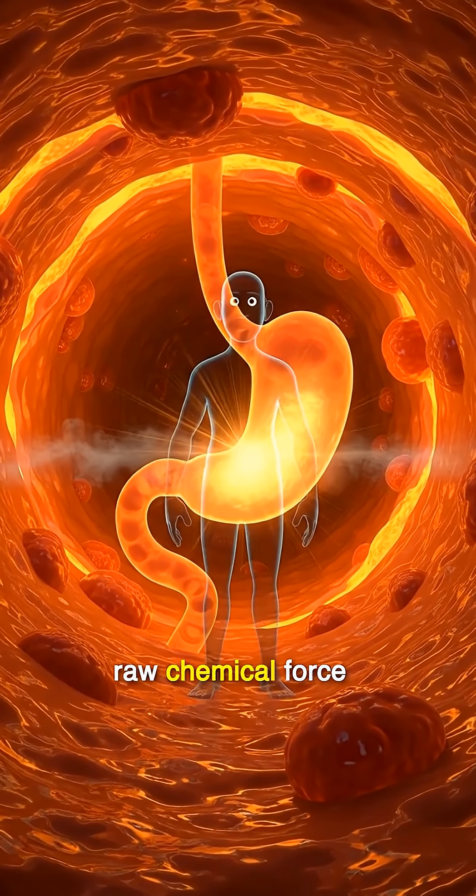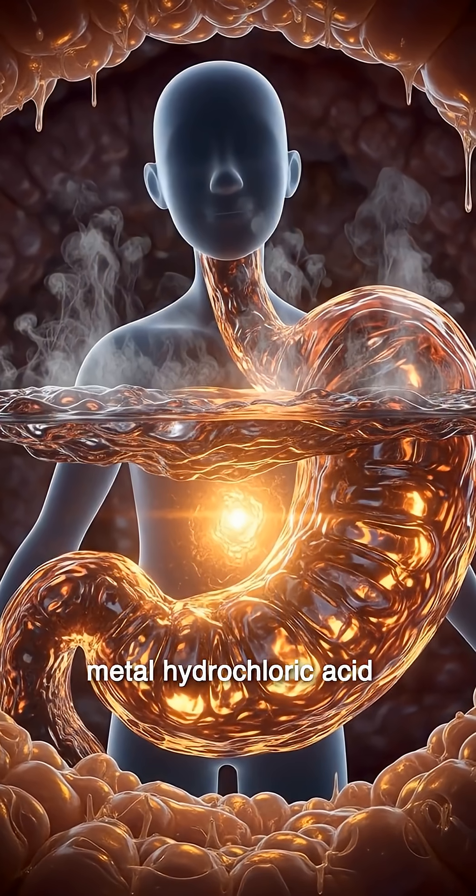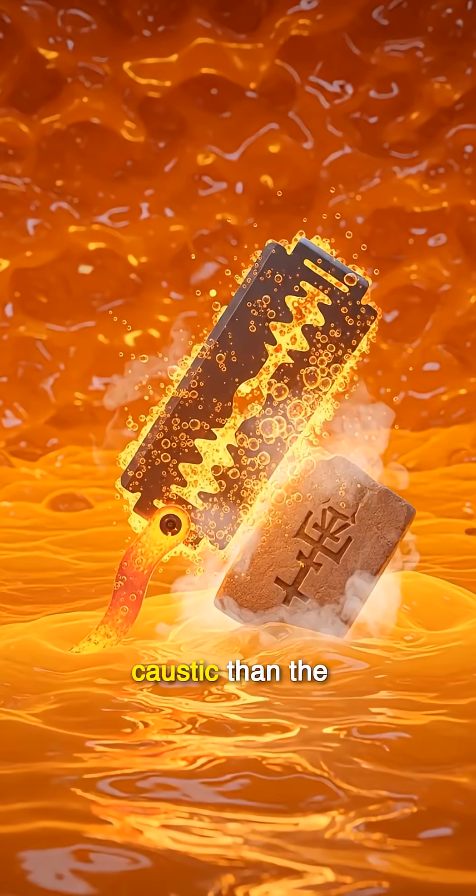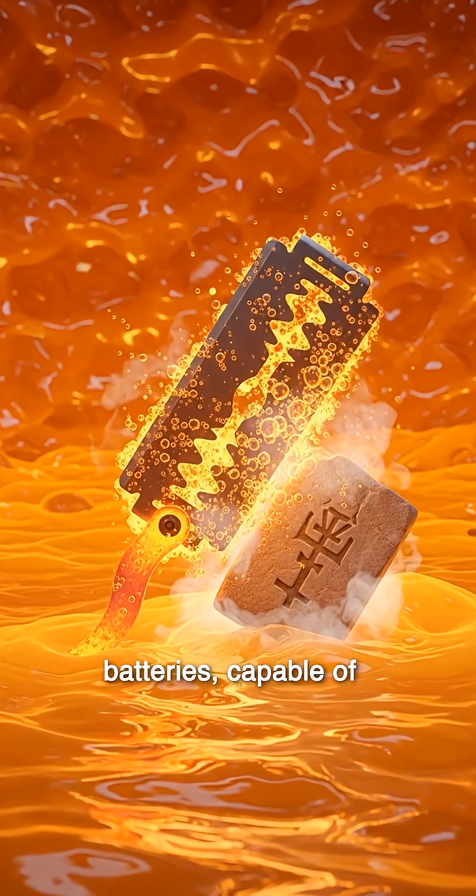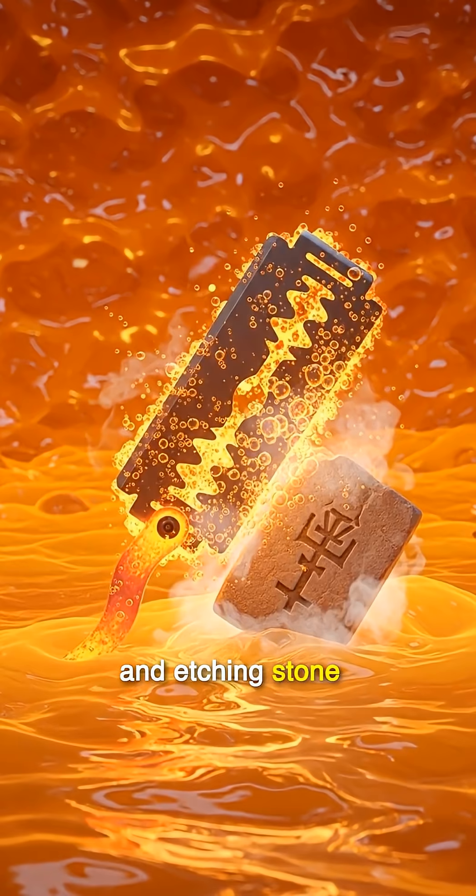Your stomach is a battleground of raw chemical force. Within its dark chamber, the acid glows like molten metal—hydrochloric acid with a pH plunging to one. This is more caustic than the acid inside car batteries, capable of burning through steel, dissolving razor blades, and etching stone.